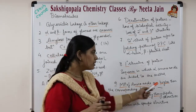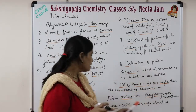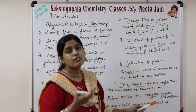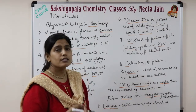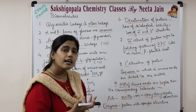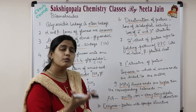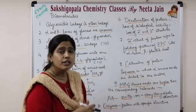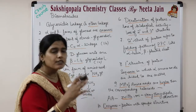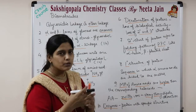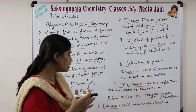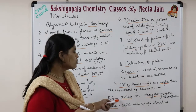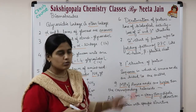A very important point: the melting point of amino acids is higher than the corresponding halo acid. Why? Because amino acids exist in the zwitterion form. When they exist in the zwitterion form, the dipole-dipole interactions become very strong. Because of this, the melting point of amino acids increases.